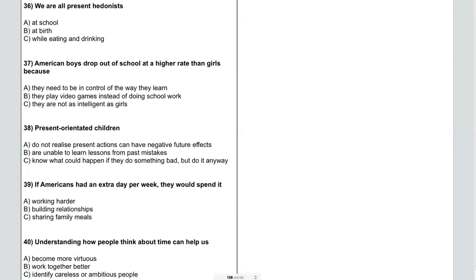Let's start with step one — reading the questions. Number 36: we are all present hedonists. This is already an excellent keyword. Number 37: American boys drop out of school at a higher rate than girls because. Number 38: present orientated children. Number 39: if Americans had an extra day per week, they would spend it. And number 40: understanding how people think about time can help us.